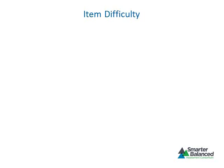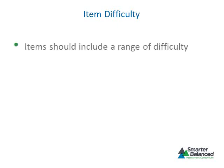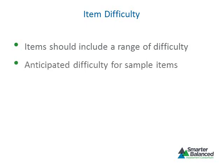A range of difficulty is necessary to discriminate between low- and high-performing students. Passages and items should form a continuum from easy — those that most students could be expected to answer — to hard — those that only a few students could be expected to answer — with most items falling in the middle range of difficulty. An adaptive test requires items that span a full range of difficulty, so item writers need to include items they perceive as easy, medium, and hard. Each sample item in the item specifications provides information about its anticipated difficulty level.